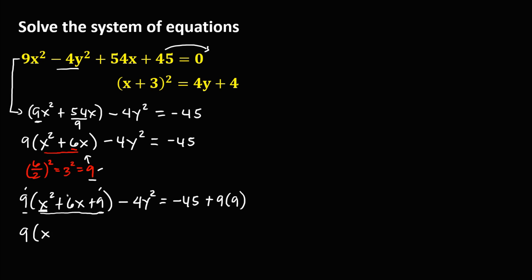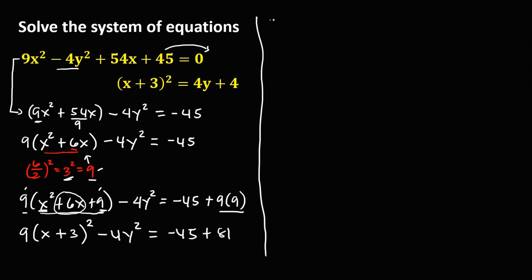Simplifying and applying factoring: the factors of x squared are x times x, and since the middle term is positive, the factors of 9 are 3 times 3, giving us x plus 3, quantity squared. Then bring down negative 4y squared. On the right side: negative 45 plus 9 times 9, which is 81, giving us positive 36.